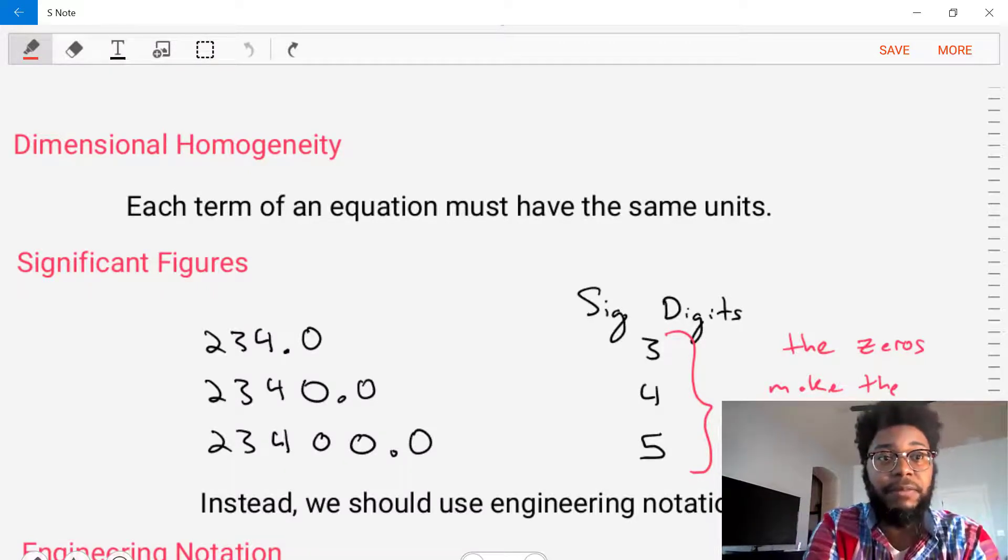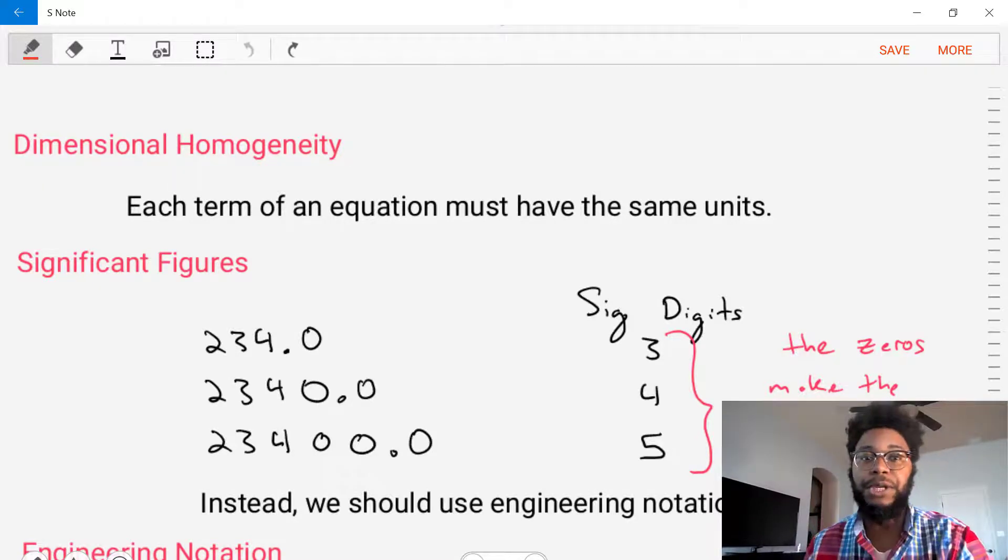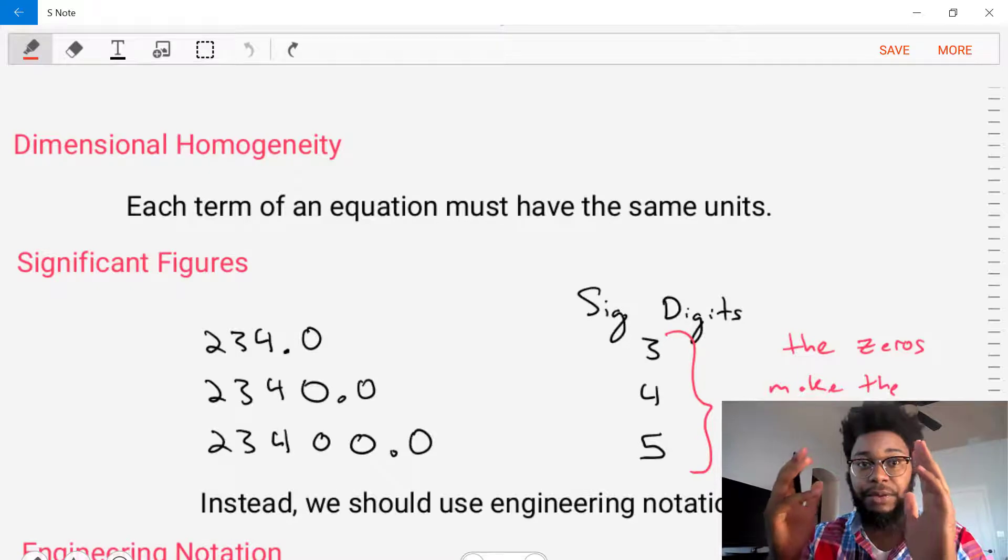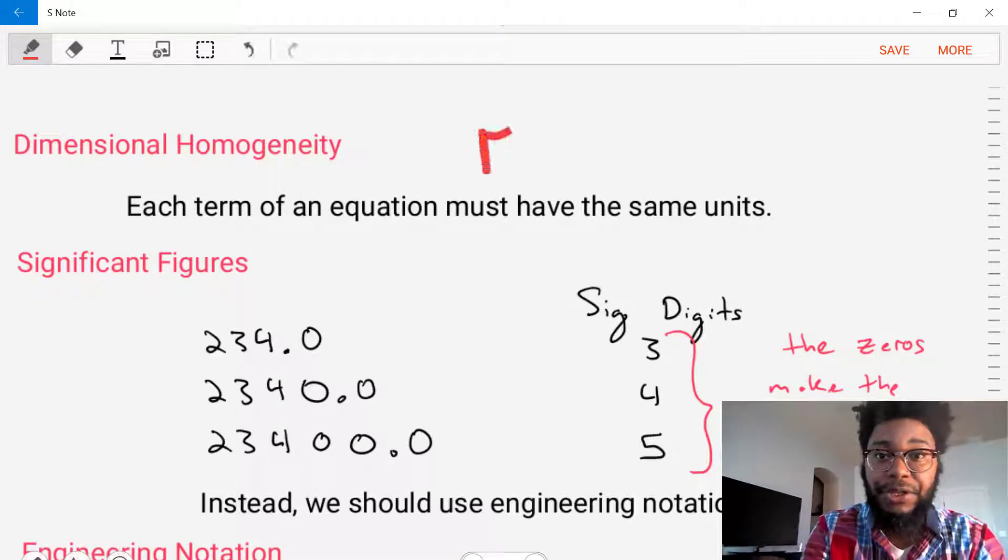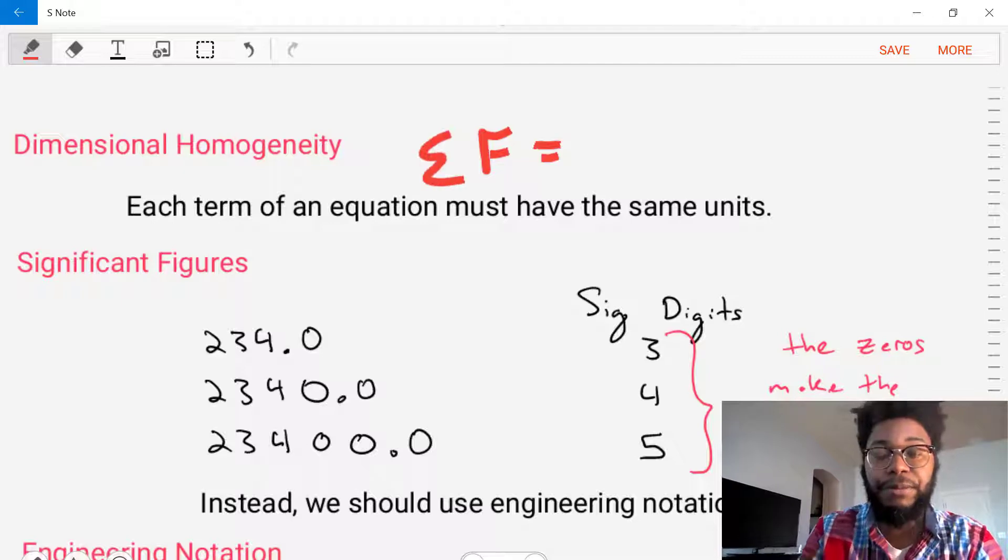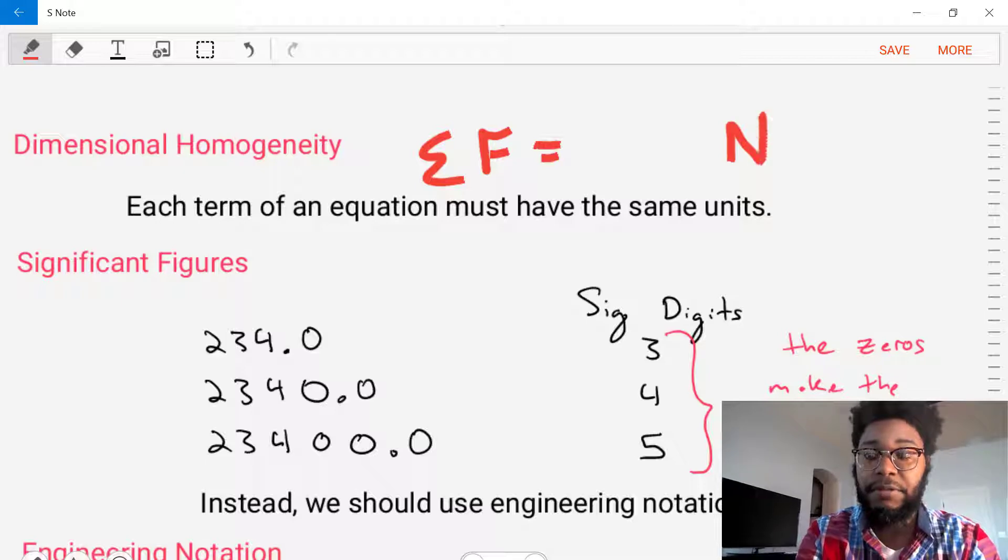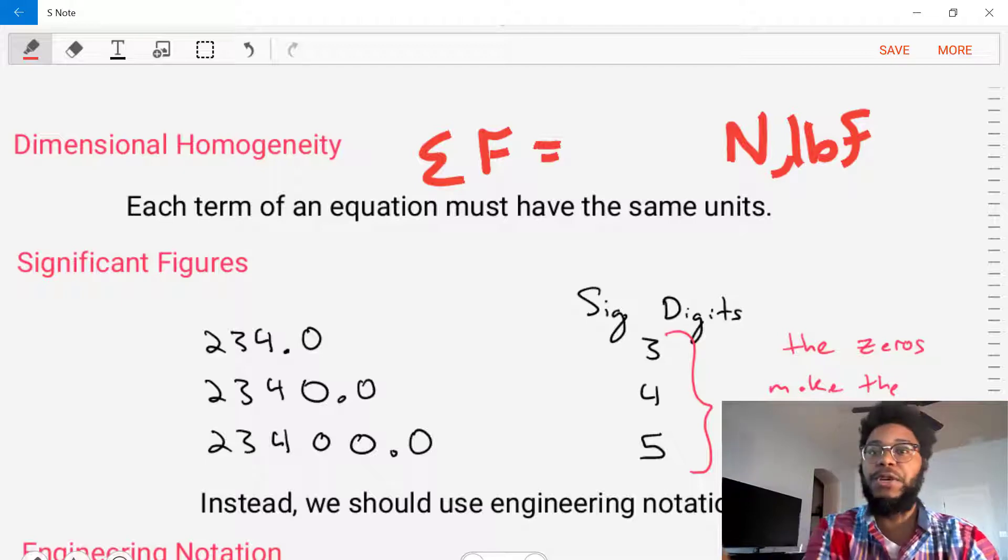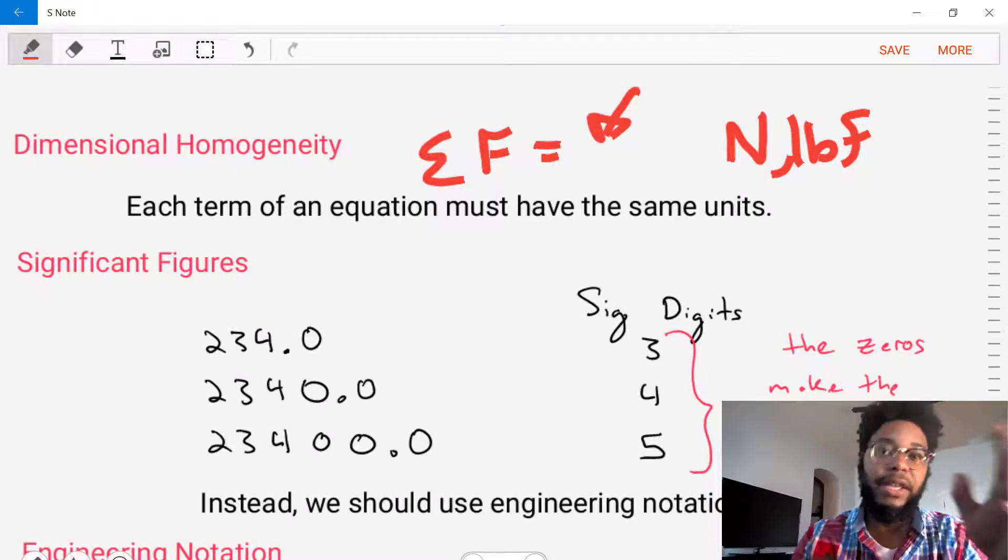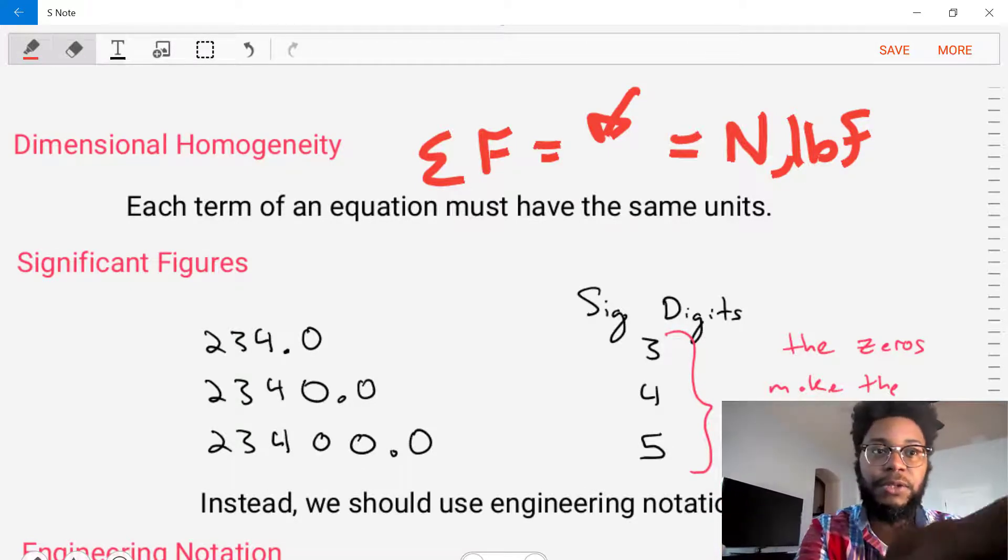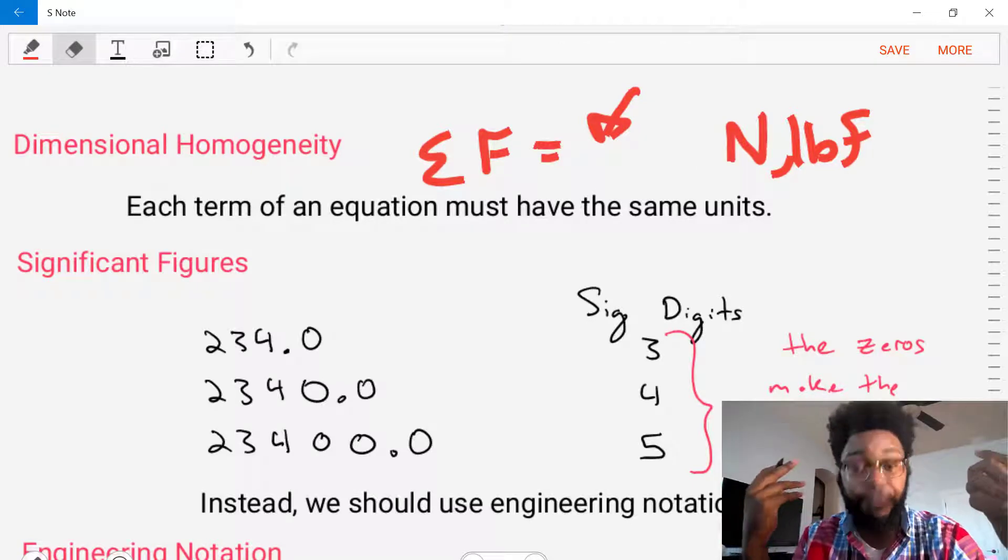The first concept is the idea of dimensional homogeneity. What does that mean? It means that the dimensions that we start with should be the dimensions that we end with. If we have an equation, say the equation is a sum of the forces equation, we know that force should have the units of newtons or the units of pound force. So when we solve this equation, we plug in and do our exercises. The final value we should get should be in terms of the units of newtons or pound force.